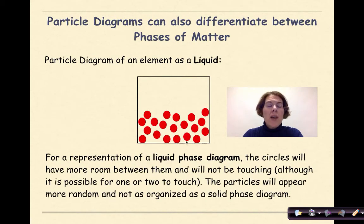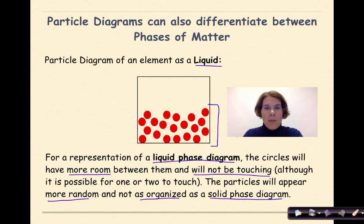Here we have a particle diagram of an element that's representing a liquid. For a representation of a liquid phase diagram, the circles will have more room between them and will not be touching. Although of course it is possible for a couple to touch, but for the most part they won't be touching. The particles will appear to be more random and not as organized as in the solid phase diagram. So this is how we would represent a liquid using particle diagrams.